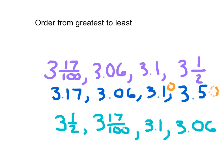I do have the correct numbers, and I also have them in the correct form, and I can think about whether I've really ordered them from greatest to least. 3 and 1 half is definitely bigger than 3 and 17 hundredths, because 3 and 1 half would be 3 and 50 hundredths. If I look at 3.17 and 3.1, that makes sense. And it's very easy to see where 1 is bigger than 0. So my answer does make sense.